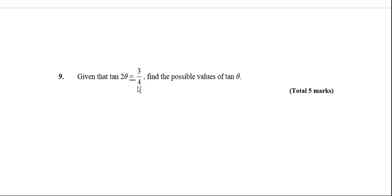Okay, so next we're going to look at a few more different types of trig equations. This is the first one here: tan 2θ equals 3/4, find the possible values of tan θ.